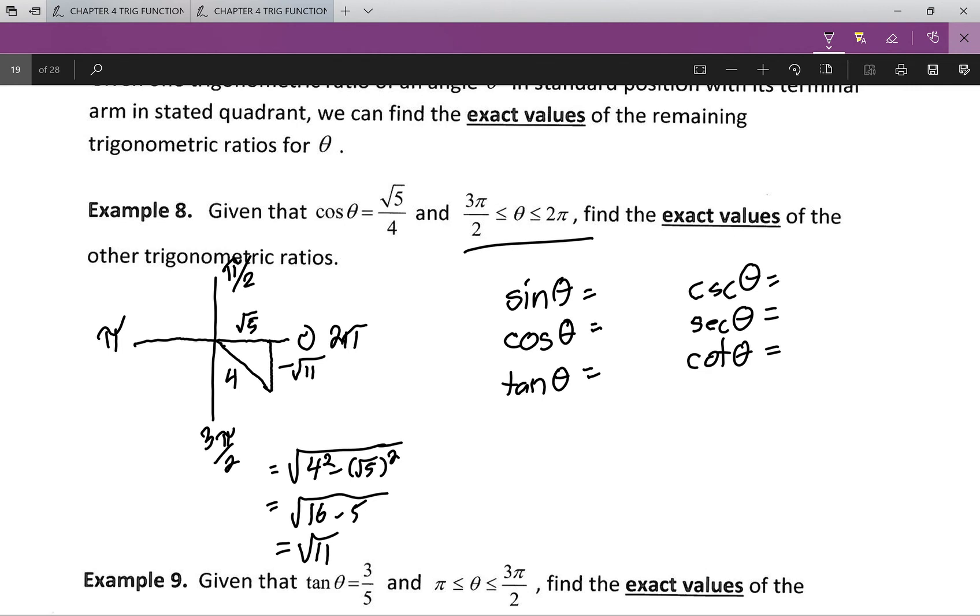So my sin theta is opposite over hypotenuse, which is negative root 11 over 4. My cos theta I had before, root 5 by 4. And tan theta is opposite over adjacent, so negative root 11 all over root 5.